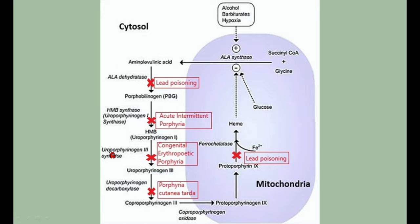Next, uroporphyrinogen 1 is converted into uroporphyrinogen 3 by uroporphyrinogen 3 synthase. Deficiency of this enzyme causes congenital erythropoietic porphyria, and the substance that accumulates is uroporphyrinogen 1. That covers the first two porphyrias.